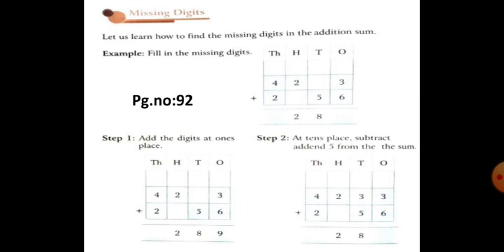So step 1, add the digits at one's place. So the one's place numbers are 3 plus 6. So 3 plus 6 is 9.